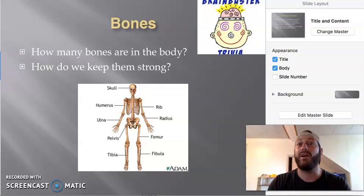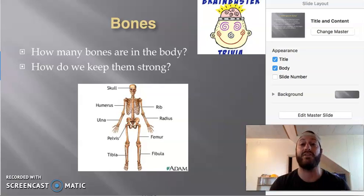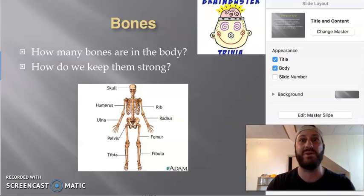Okay, so there are actually 206 bones in your body. It's quite a lot. Fun fact, more than half of those bones are in your hands and your feet. So you have lots of bones there.